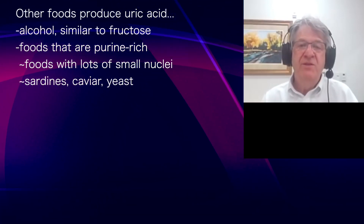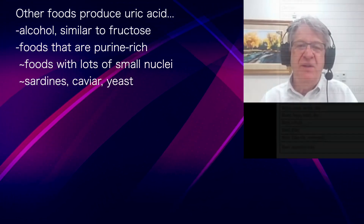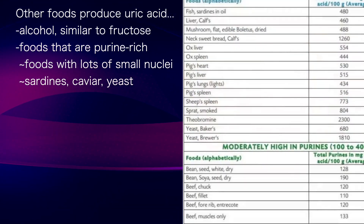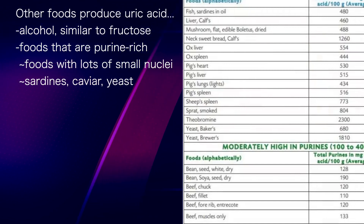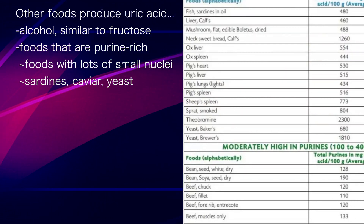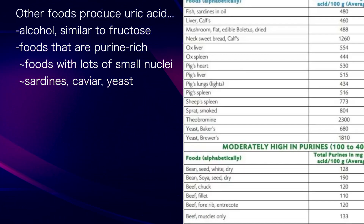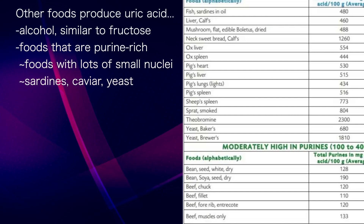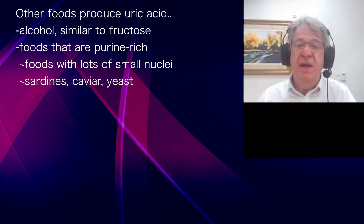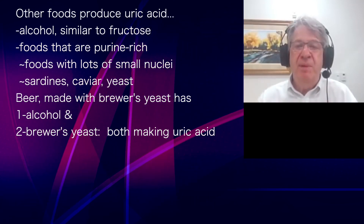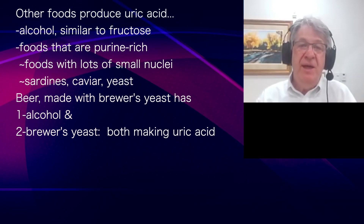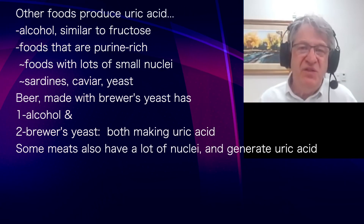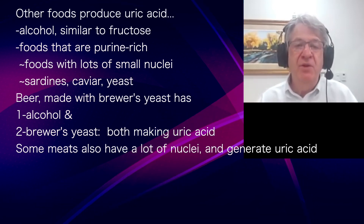Purine-rich foods include things like sardines and caviar, which have a lot of small nuclei packed into small cells — lots of RNA and DNA. Yeast also has a lot of cells and nuclei, so brewer's yeast can have huge amounts of RNA and DNA. When you make beer with brewer's yeast, the alcohol is generating uric acid, but the brewer's yeast is too.